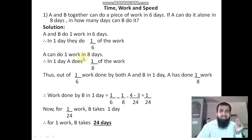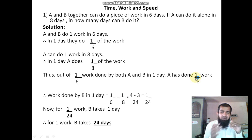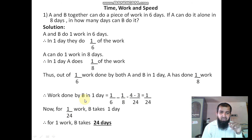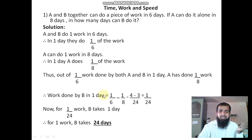So together A and B do 1 by 6 in one day, and A alone does 1 by 8 work. Out of the 1 by 6 work done by both A and B in one day, A has done 1 by 8 of the work. Work done by B in one day — you have to subtract: 1 by 6 minus 1 by 8. So you subtract A's work from the combined work to get B's work done in one day.